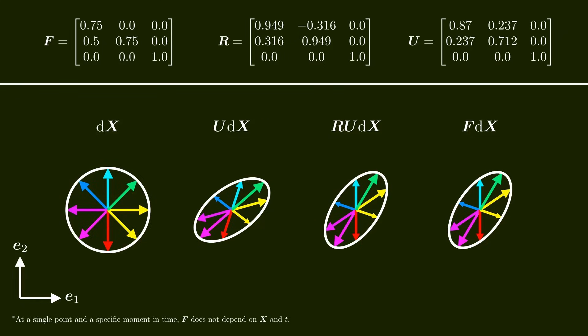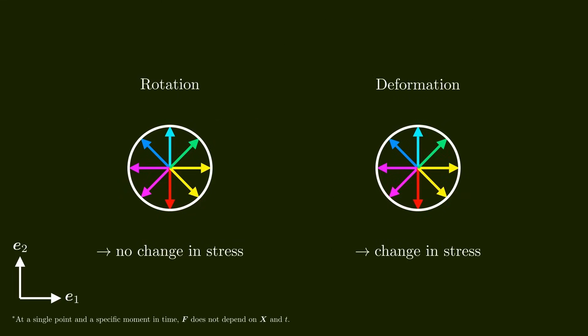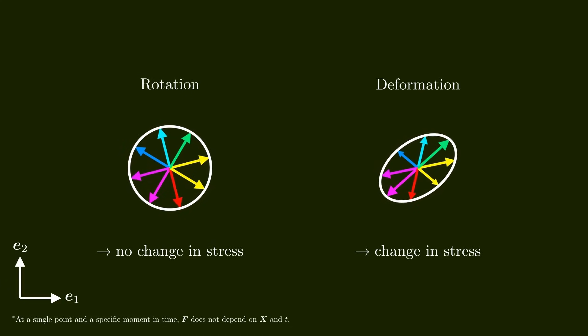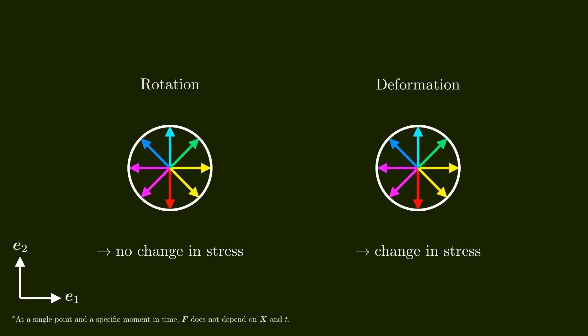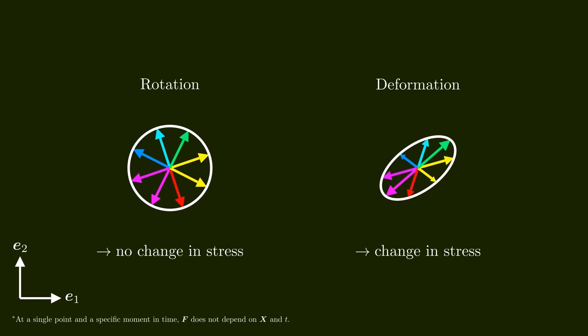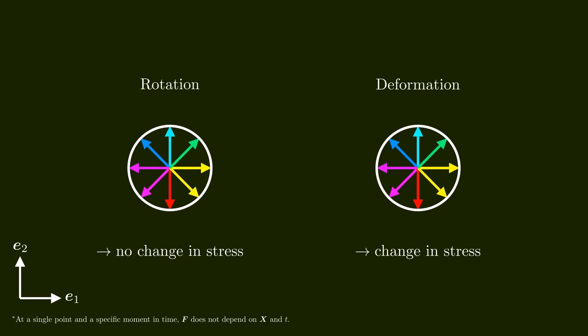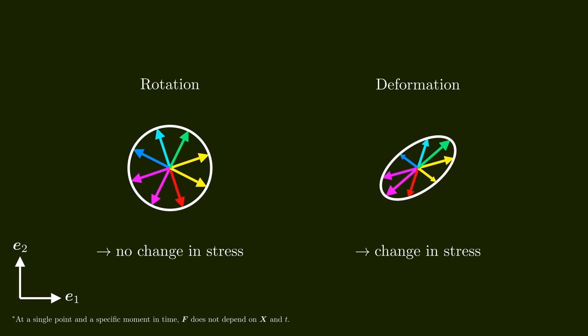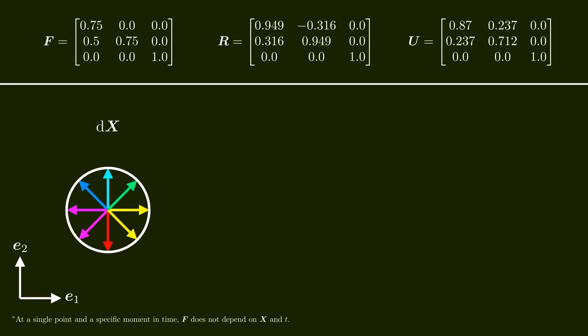In continuum mechanics, we want to study how objects deform upon external influences, and we need to formulate a relationship between deformation and the stresses acting inside the matter. Stresses should not depend on rotations — if we rotate an object, the stresses inside should not change. We say that stresses should be invariant to rotations. This means that when formulating a stress-deformation relationship, we should not make stress depend on F. Instead, it makes much more sense to make stress depend on U. In contrast to F, U is a pure measure of deformation that doesn't contain information about rotation — U is invariant to rotations. By making stress dependent on U, we ensure that stress does not change upon rotation. This is why the polar decomposition is so useful.